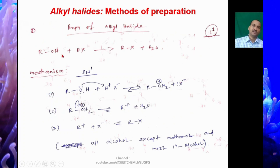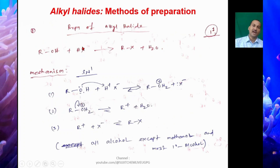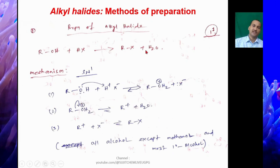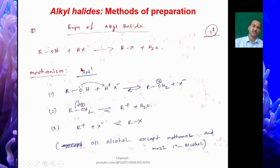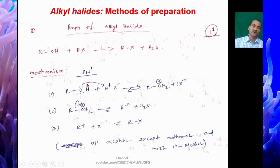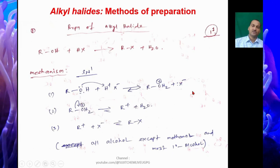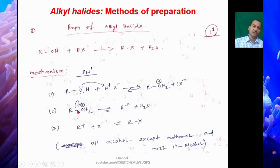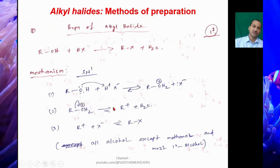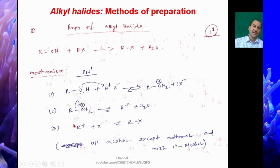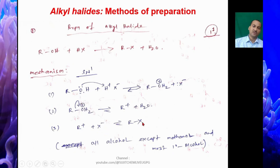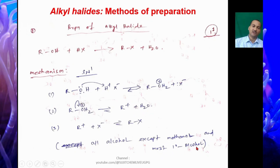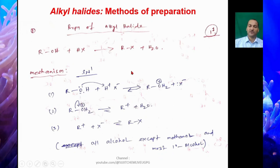Next is preparation from alcohols by reacting with hydrohalic acids HX: ROH + HX gives RX + water. This follows an SN1 mechanism. The oxygen lone pair attacks H+ to give ROH2+, then the R–O bond breaks to give carbocation R+ plus water. R+ combines with X− to give RX. All alcohols except methanol and most primary alcohols can undergo this type of reaction.